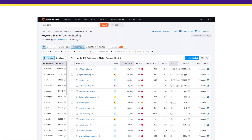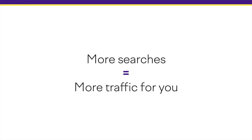I recommend choosing a keyword that has relatively strong search volume for your industry. Sort your keyword list in SEMrush by search volume to bring up keywords with the most monthly searches and scroll down the list from there. In general, more searches equals more potential traffic. So if a keyword has high search volume and low competition, that usually makes it a winner.